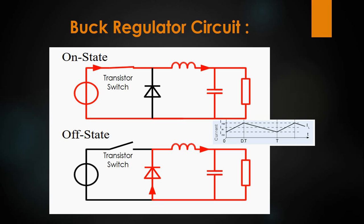Now, when the switch is made open, the current has to flow due to the natural tendency of the inductor to resist the current change, and hence it acts as a source. The diode is forward biased and the current will flow through the path shown in red in the second diagram. The graph shows the output current. This ensures that the output voltage and current are maintained. A smoothing capacitor is also placed at the output to ensure that the output voltage does not vary significantly. This is how a buck regulator works.